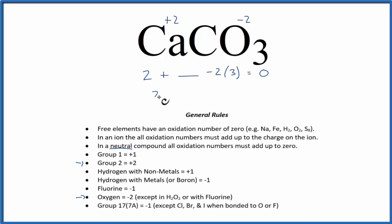So this works out to 2 plus something minus 6 equals 0. Well, 2 plus 4, that would give us 6 minus 6 is 0, so the oxidation number on this carbon is plus 4.